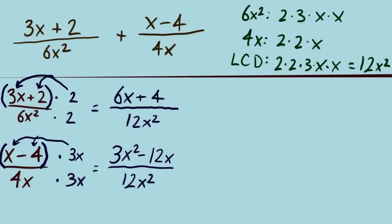And how do we finish up now that we do have fractions that have the same denominator? We're real close. We're at the finish line basically. Our denominator is going to be the same, 12x squared, and we combine like terms in the numerators.